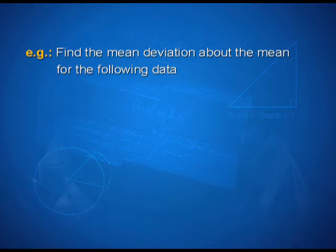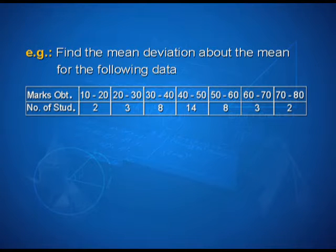Let us take up an example. Find the mean deviation about the mean for the following data. Marks obtained and number of students are the two columns. Marks obtained range from 10 to 20, 20 to 30, 30 to 40, 40 to 50, 50 to 60, 60 to 70, and 70 to 80. The corresponding number of students are 2, 3, 8, 14, 8, 3, and 2.